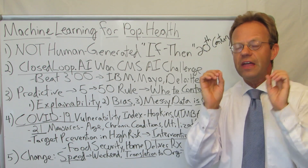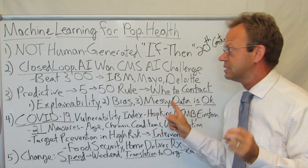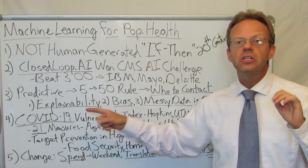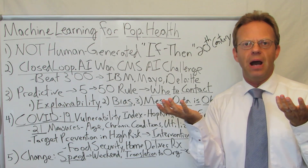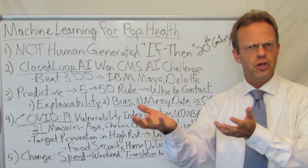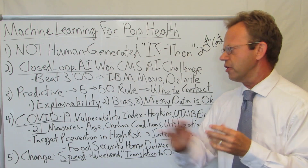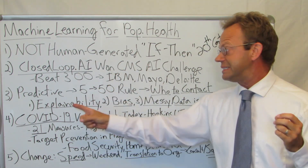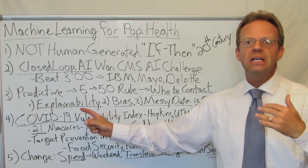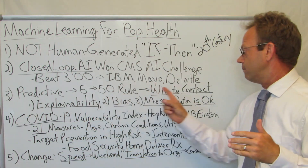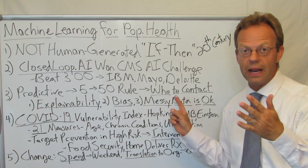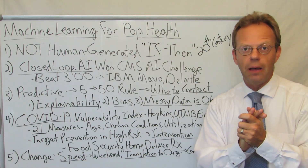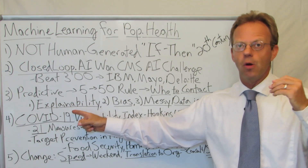But before I do that, they point out three aspects of machine learning that are super important. One is explainability. The point is that machine learning is kind of a black box. How did the software know to come up with those particular 5% of the people? The point is, it has to be explainable. Because you can't convince the people who are going to do the contact — the physician, the nurse, whatever — to effectively do their job if you can't explain to them why.